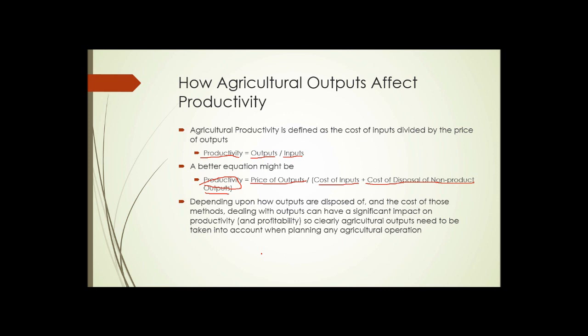A better equation might be: productivity equals the price of outputs divided by the cost of inputs plus the cost of disposal of non-product outputs. Those disposal costs, if they exist — and some operations are working to have no disposal costs — are true costs. Depending on how the outputs are disposed of, dealing with outputs can have a significant impact on productivity and profitability, so we need to take those outputs into account when planning any agricultural operation.